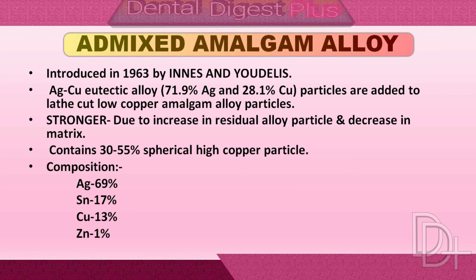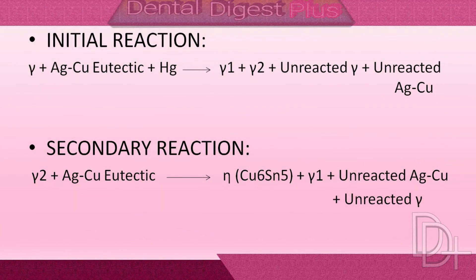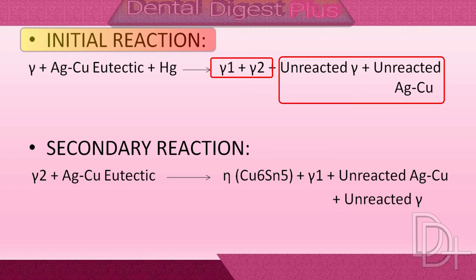The silver-copper particles, as well as the silver-tin particles, probably act as strong fillers in amalgam, thereby strengthening the amalgam matrix. When mercury reacts with an admixed powder, in the initial reaction gamma-1 and gamma-2 phases form, plus unreacted gamma particles as well as unreacted silver-copper particles remain.